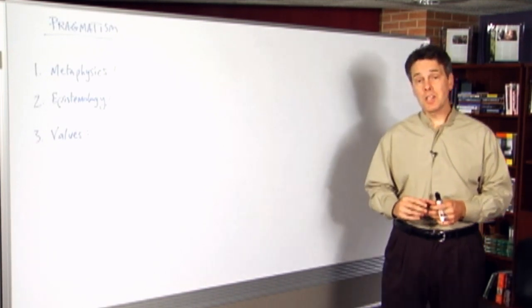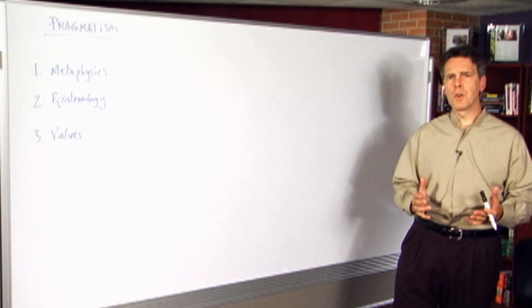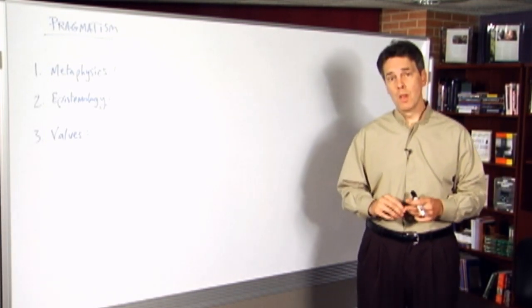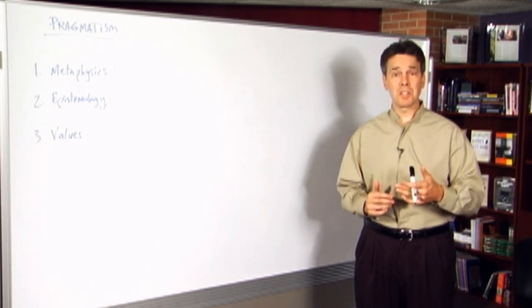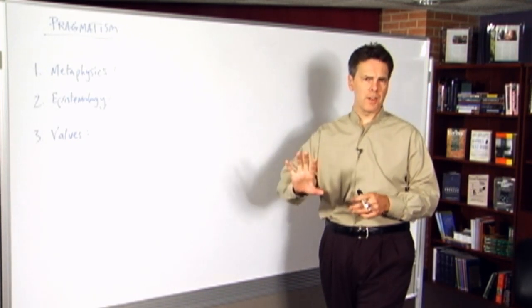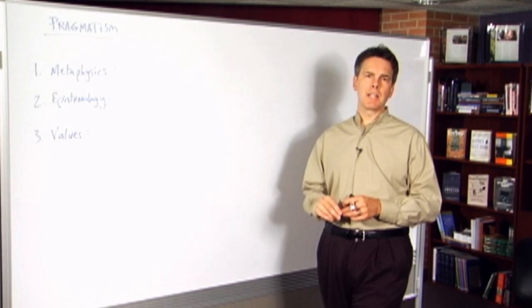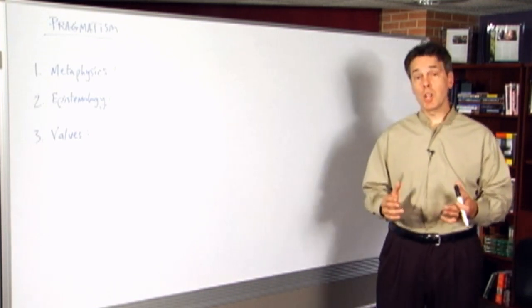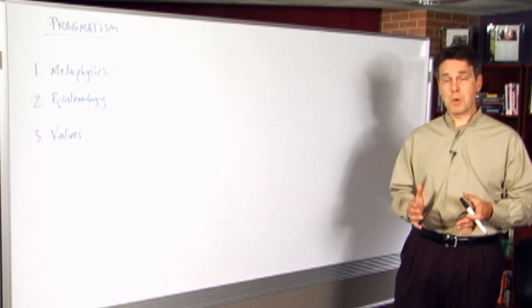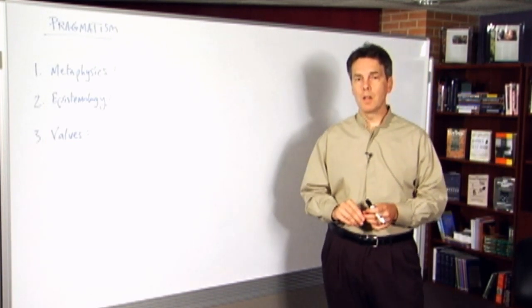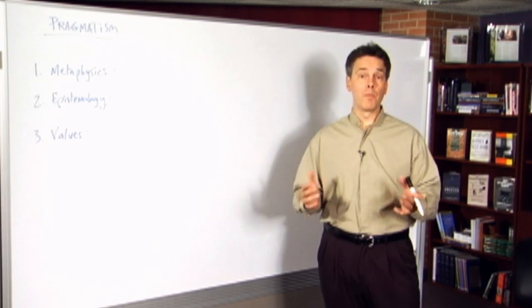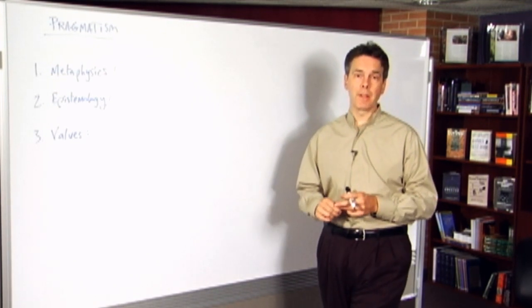As the United States came to be a world power, not only economically, politically and so forth, but also culturally and intellectually, it made its own distinctive contributions to the world of philosophy, starting in the second half of the 19th century. And the first generation of major pragmatist philosophers, Charles Peirce, William James, and then a little bit later, John Dewey, all of them are American thinkers.